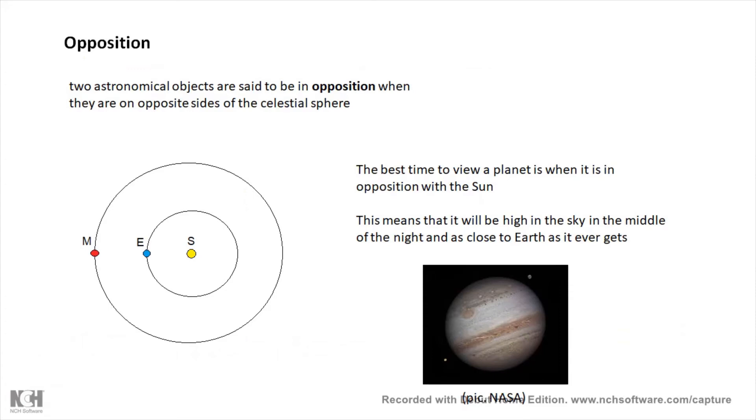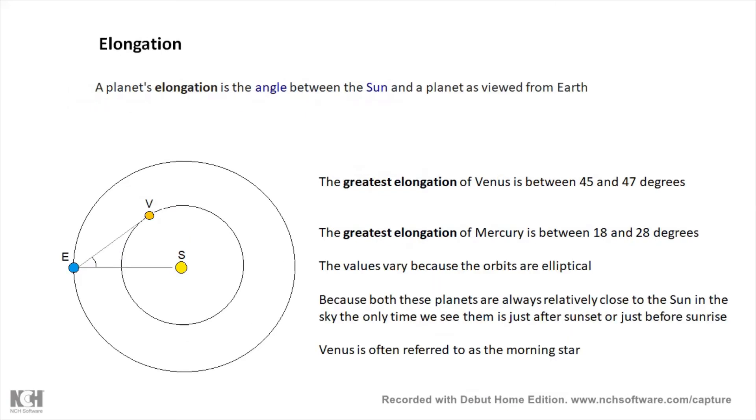Opposition: two astronomical objects are said to be in opposition when they are on opposite sides of the celestial sphere, or if you like, there's the Sun and there's a planet and they are on opposite sides of the Earth. This is the best time to view a planet is when it's in opposition. Why? Because it will be in the middle of the sky in the middle of the night, so it will be nice and dark, and also a planet is as close as it gets to the Earth when it's in opposition, so it will be as big as it gets and it will be nice and dark. And if you want to see a planet, the best time to do it is when it's in opposition. Then there's a picture of Jupiter in opposition.